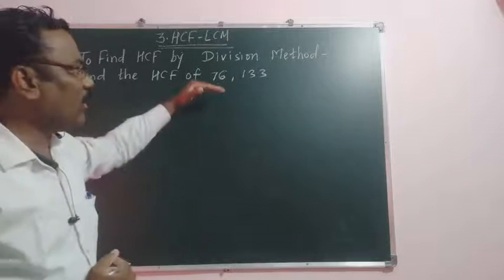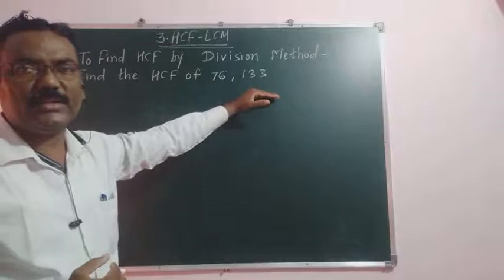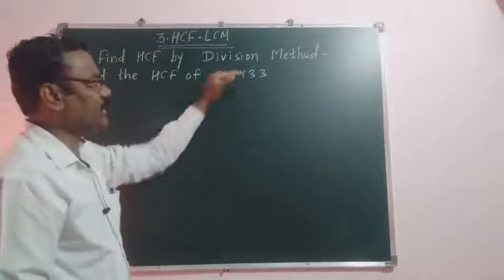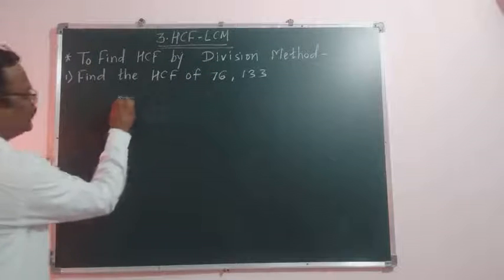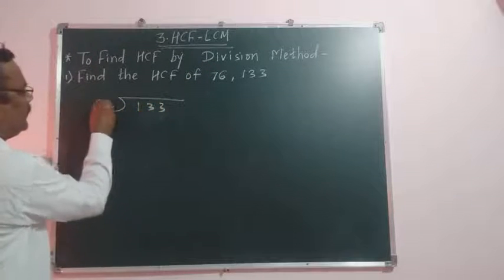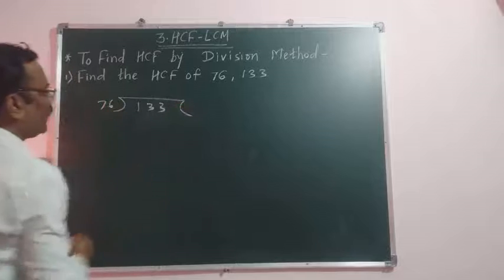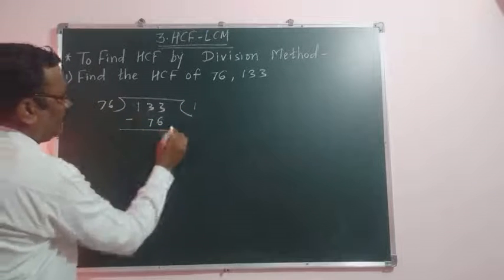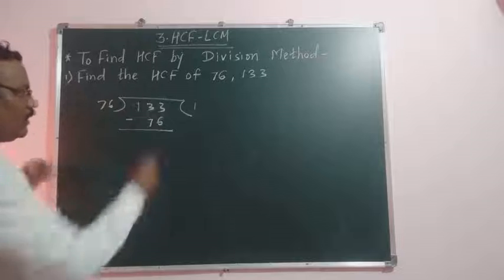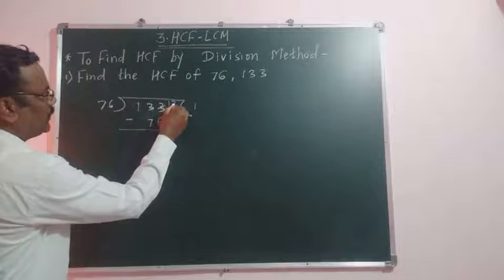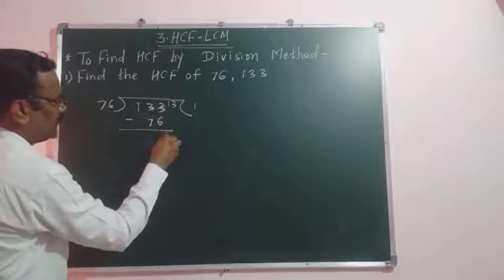Now, smaller number is 76, so divide here 133 by 76. 76 ones are 76. Here 13, so 13 minus 6 is nothing but 7.